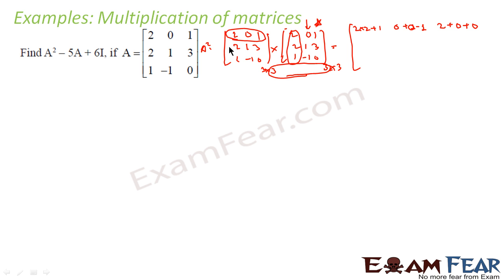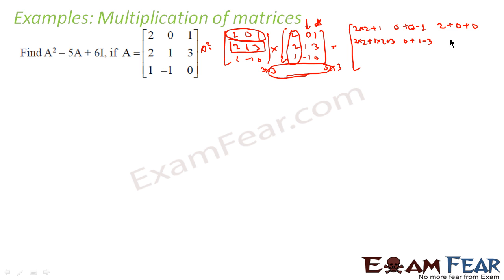For the second row, first column: 2×2 + 1×2 + 3×1 = 9. Second row, second column: 2×0 + 1×1 + 3×(-1) = -2. Second row, third column: 2×1 + 1×3 + 3×0 = 5.